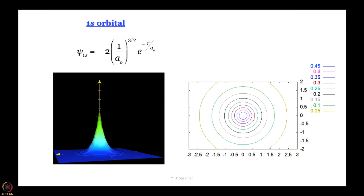The first picture is the 1s orbital — but it is important to understand what has been drawn. The 1s orbital function is the simplest possible: some constant multiplied by an exponential decay in r, e to the power −r/a₀. If you draw it in two dimensions you just get an exponential decay. Let me draw the function and see what we get.